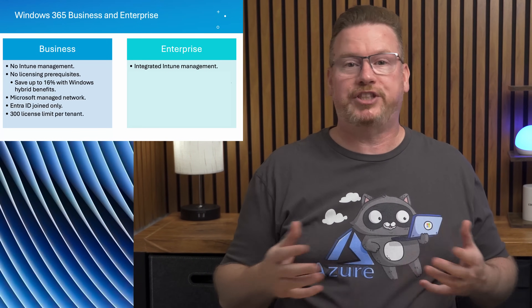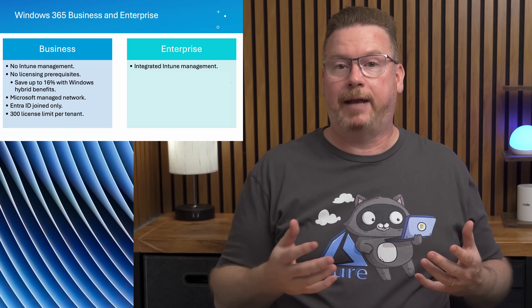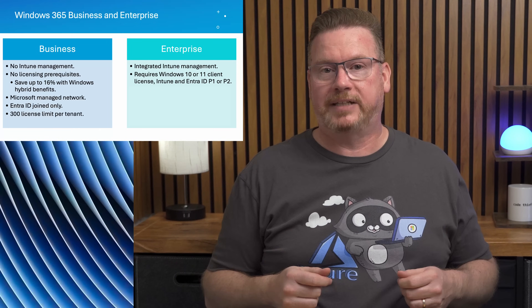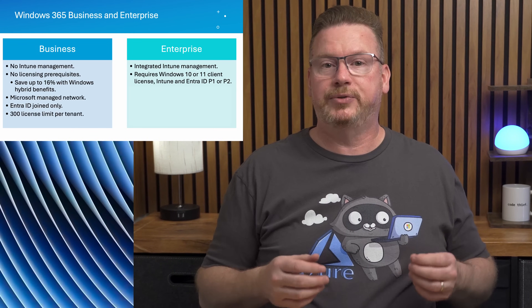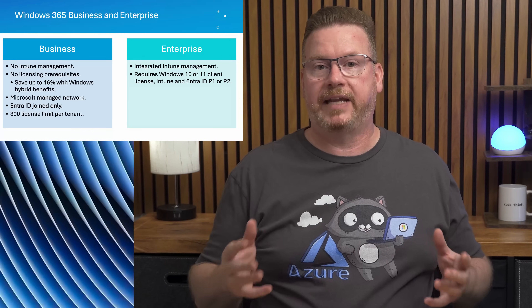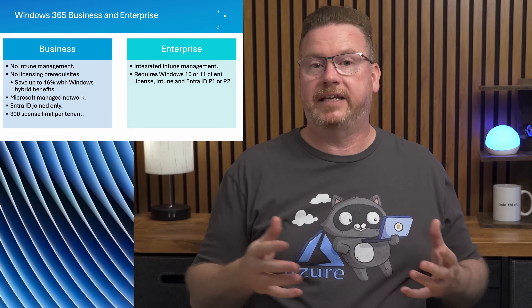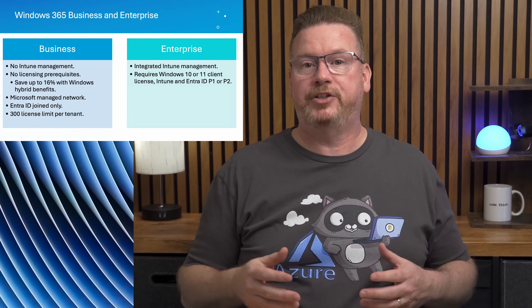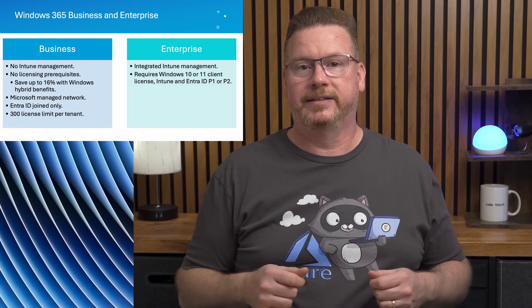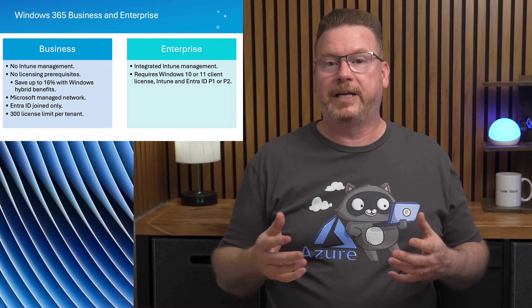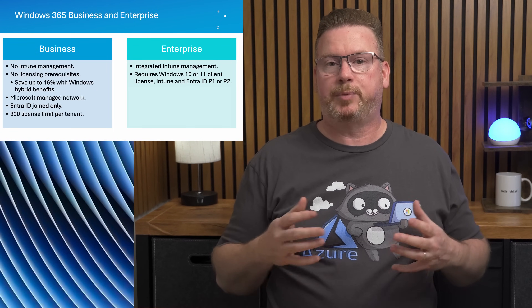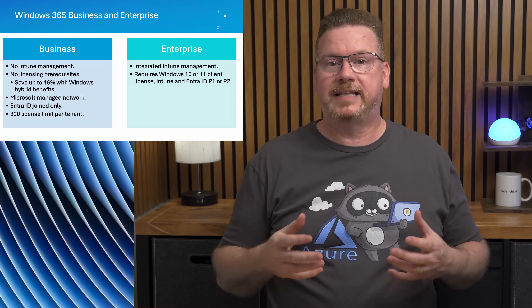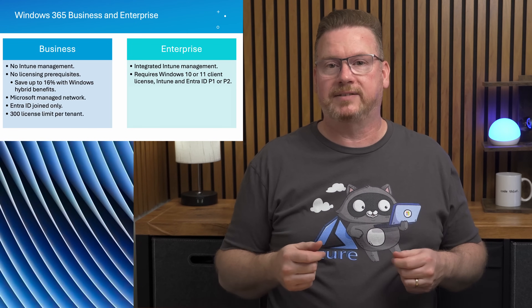Next, let's review Windows 365 Enterprise. Unlike Business, Enterprise has a dedicated blade in Intune to manage cloud PCs — we can push Intune policies, configuration profiles, and applications to Enterprise cloud PCs. Enterprise does not include the client OS license like Business does; it requires the user to have a Windows 10 or 11 Enterprise client OS license. Because of the Intune integration, an Intune license is also required, as well as an Entra ID P1 or P2 license.